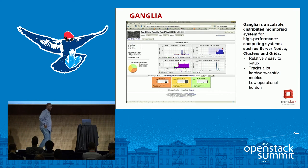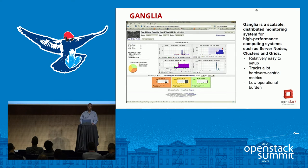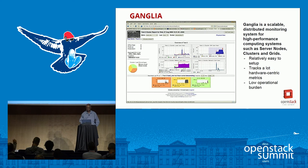Ganglia has been around for some time, mainly used for hardware-centric metrics. We still use it, although the trend — especially for the cloud — has been more toward CollectD, Grafana, and other tools. But Ganglia is still very relevant. It's very scalable, relatively easy to set up, tracks a lot of hardware-centric metrics, and has a very low operational burden.